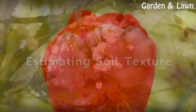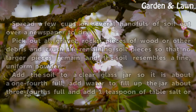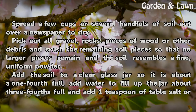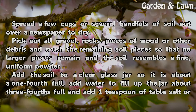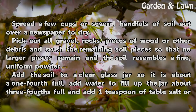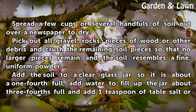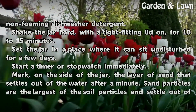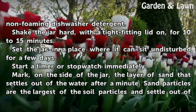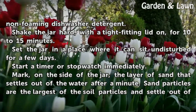Estimating Soil Texture. Spread a few cups or several handfuls of soil out over a newspaper to dry. Pick out all gravel, rocks, pieces of wood, or other debris, and crush the remaining soil pieces so that no larger pieces remain and the soil resembles a fine, uniform powder. Add the soil to a clear glass jar so it is about one-fourth full. Add water to fill the jar about three-fourths full and add one teaspoon of table salt or non-foaming dishwasher detergent. Shake the jar hard, with the tight-fitting lid on, for 10 to 15 minutes.